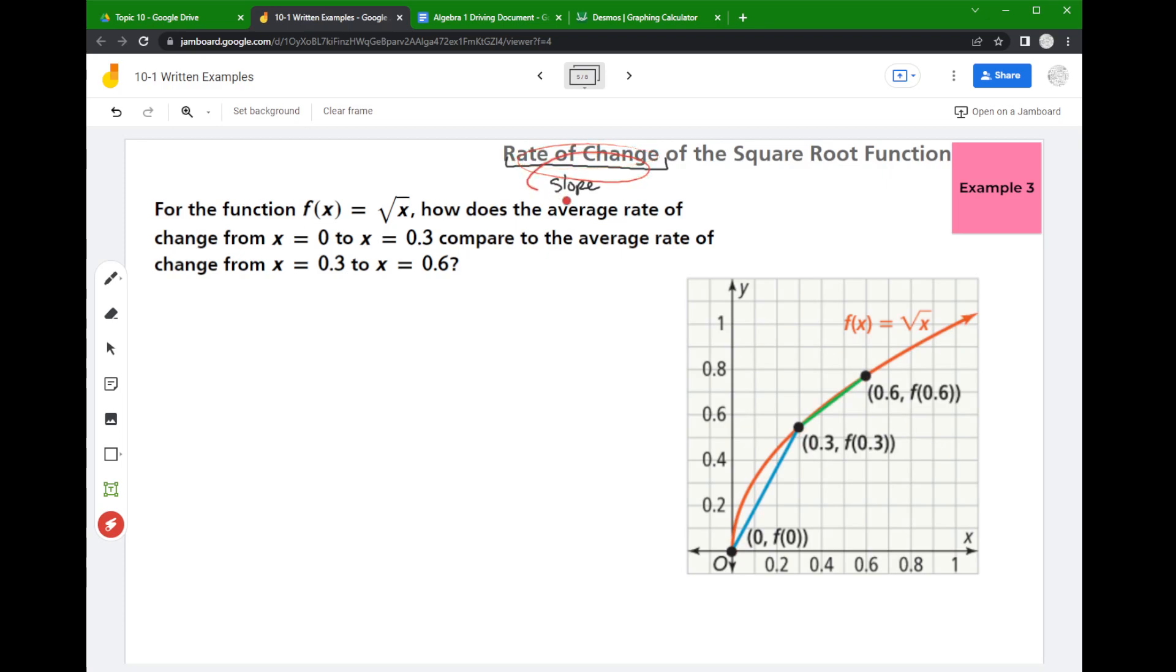So when we talk about the average rate of change here, the slope itself is describing a line that is a straight line that connects the endpoints that are described here in these intervals.